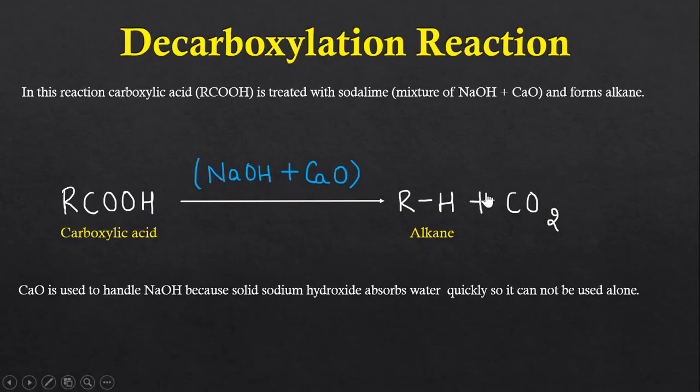In this reaction, carboxylic acid (RCOOH) is treated with soda lime, which is a mixture of sodium hydroxide (NaOH) and calcium oxide (CaO), and forms alkane (R-H). There's an elimination of CO2 molecule, which is known as decarboxylation.